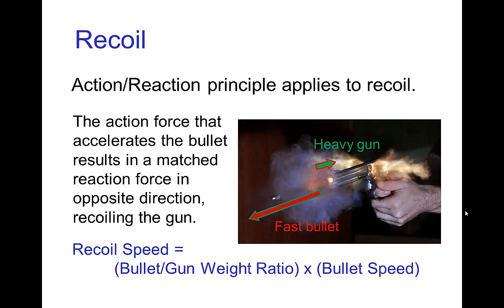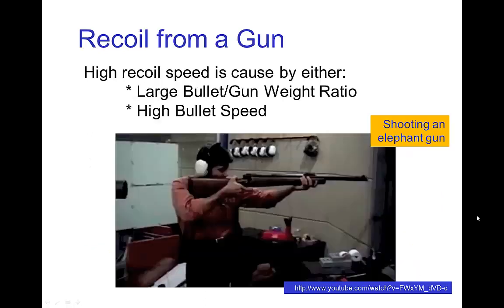Those forces are equal and opposite — it's an action-reaction pair — but that doesn't mean that the accelerations are the same. The acceleration depends on the weight of the bullet and the gun, and the resulting speed in the recoil depends on the ratio of the weight of the bullet to the weight of the gun, times the speed of the bullet.